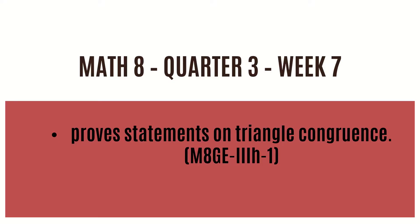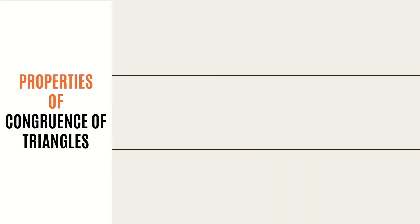For this week's lesson, we are going to prove statements on triangle congruence. From our previous lessons, we say that two triangles are congruent if the six corresponding parts are congruent. In general, two figures are said to be congruent if they have the same shape and size. Hence, congruent figures can fit each other exactly. It is important to list the letters of the vertices in the correct order whenever you write a congruent statement. In here, we have the properties of triangle congruence.